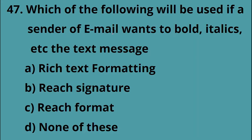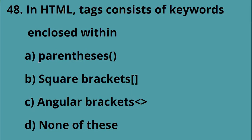If a sender of an email wants to use bold, italics, etc. in the text message, that is Option A, text formatting. In HTML, tags and keywords are enclosed within Option C, angular brackets.